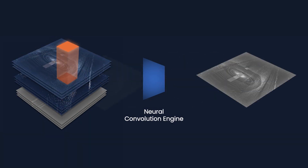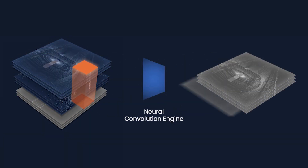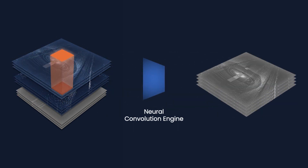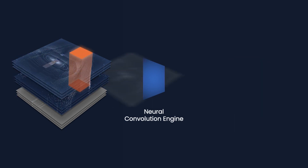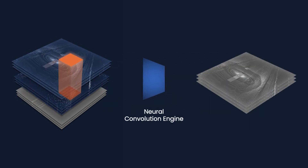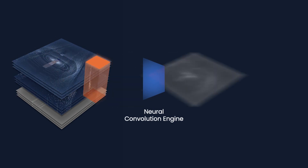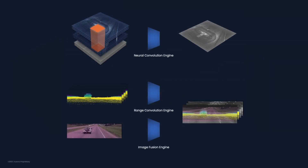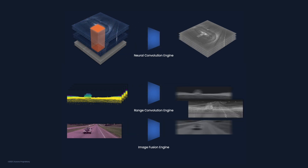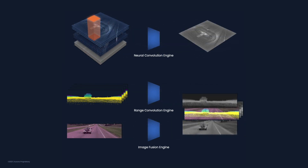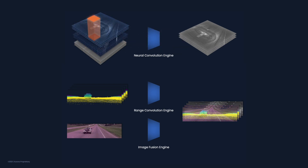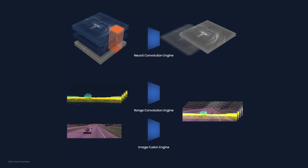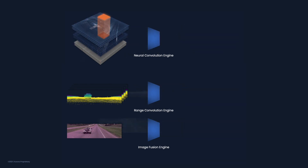Here is an animation of the neural convolution engine and how it creates an enriched view of the world around the Aurora driver. Euclidean tensor views from LiDAR, radar, and map data get stacked into a tensor that is processed by the neural convolution engine to produce intermediate Euclidean tensor view features. Similarly, range view inputs are processed by their own neural convolution engine to produce intermediate range view features. Image data inputs are fused with the range view features using a proprietary image fusion engine to produce a range view enriched by both image and LiDAR inputs.